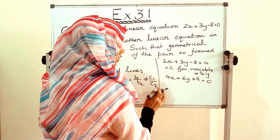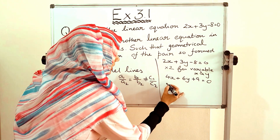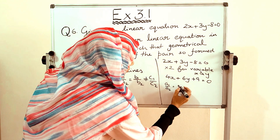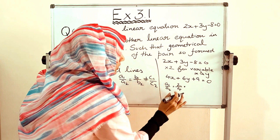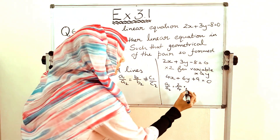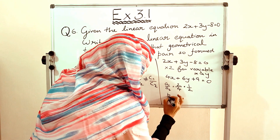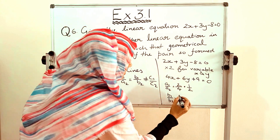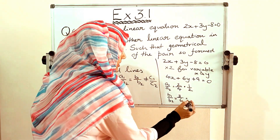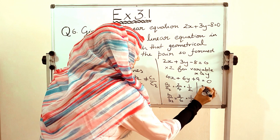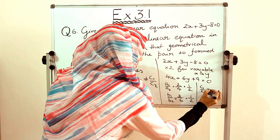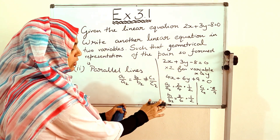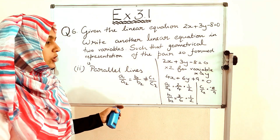Let us check: a1/a2 = 2/4 = 1/2, and b1/b2 = 3/6 = 1/2, and c1/c2 = −8/9. So a1/a2 = b1/b2 ≠ c1/c2, confirming the lines are parallel.